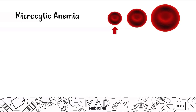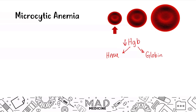When it comes to microcytic anemias specifically, you should know that these are caused by defects in hemoglobin production. Hemoglobin is made up of two main molecules: heme and the globin chains. If any part of the synthesis of either of these two molecules is disrupted — whether heme synthesis or globin chain synthesis — you are going to have a decreased production of hemoglobin, and that will lead to a microcytic anemia.